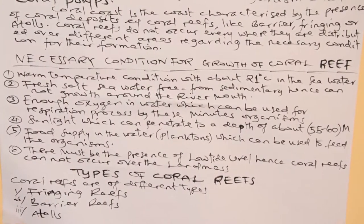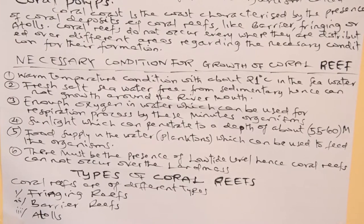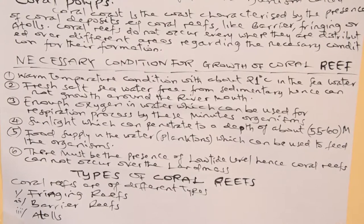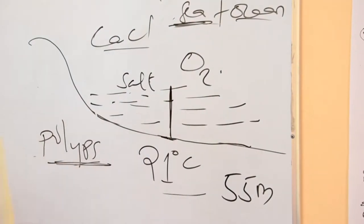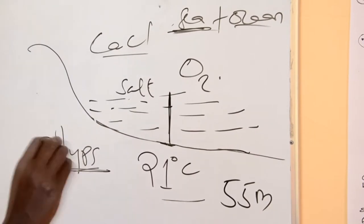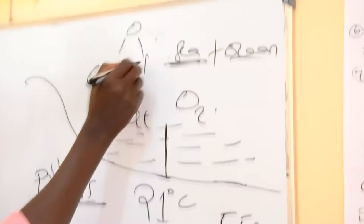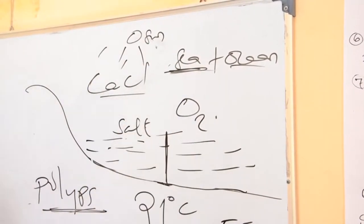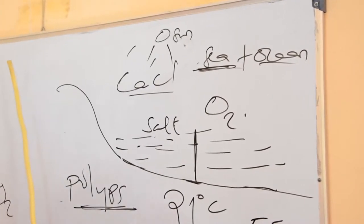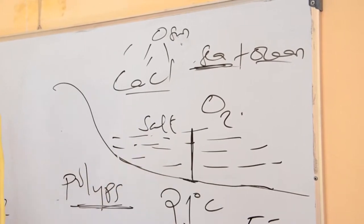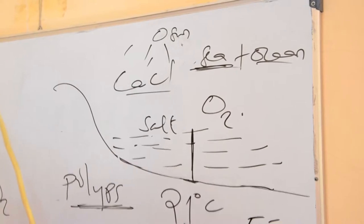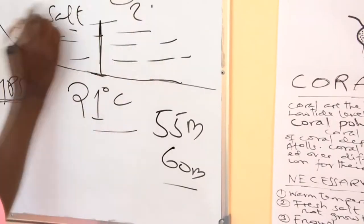Another condition is sunlight which can penetrate to a depth of about 55 up to 60 meters. Dear students, the deepness or the basin or the depression of the ocean nearby this organism should not be too deep, so as to allow the penetration of sun rays to this organism. In order to grow, this organism should not be deep in nature so as to allow sunlight penetration. It is just depending on an area of about 55 up to 60 meters depth.